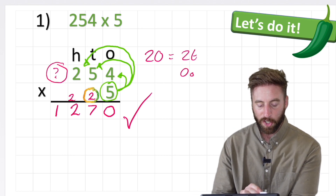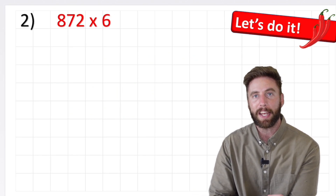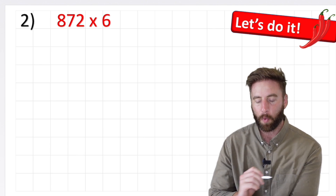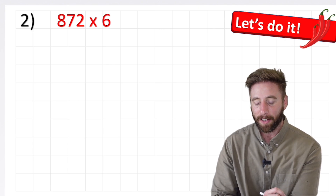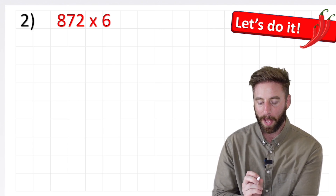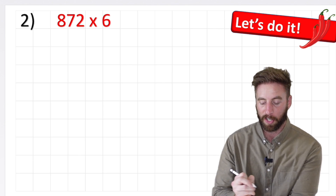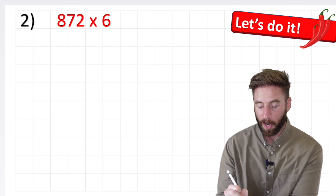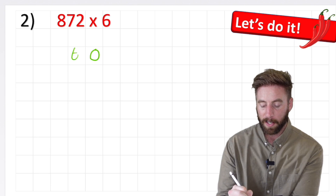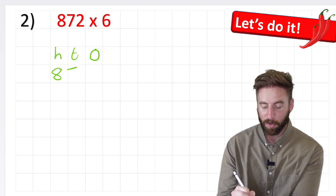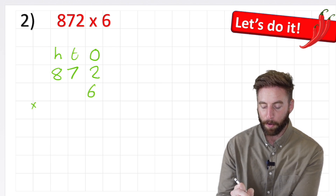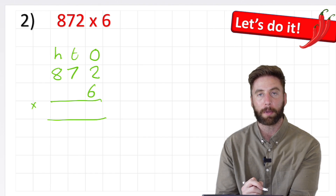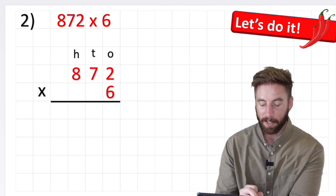Let's look at our red chili challenge — our next question, which is 872 times 6. Why is this harder? Well, it's just because we have more difficult multiplications here. So let's set up our place value chart like before: ones, tens and hundreds, which means I can put my 872 multiplied by 6 and put my equals line ready to begin.